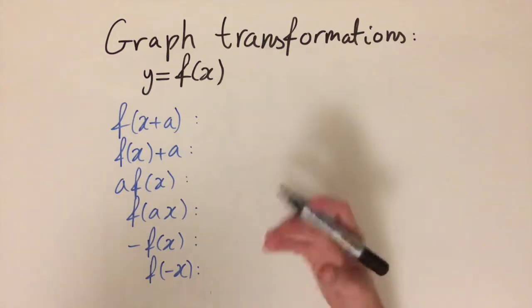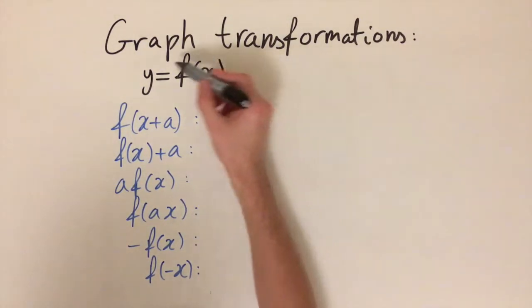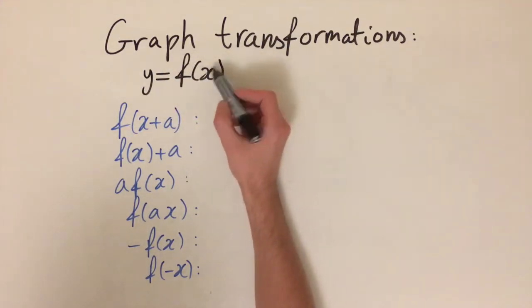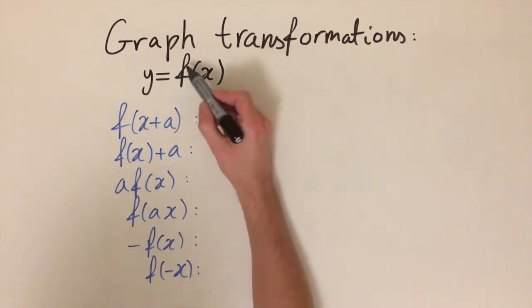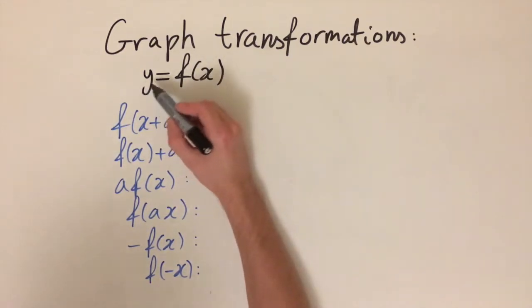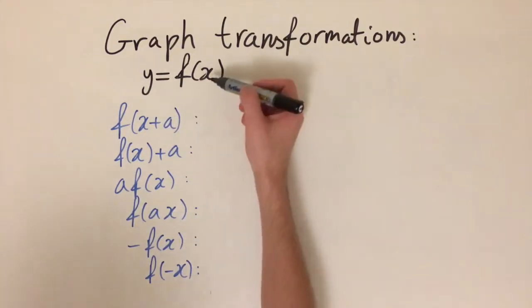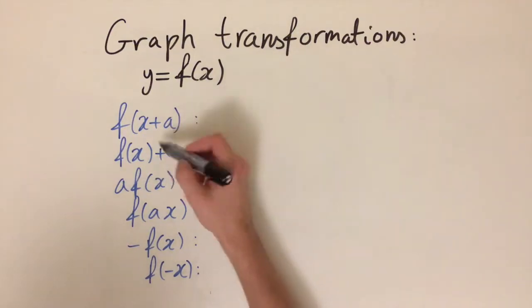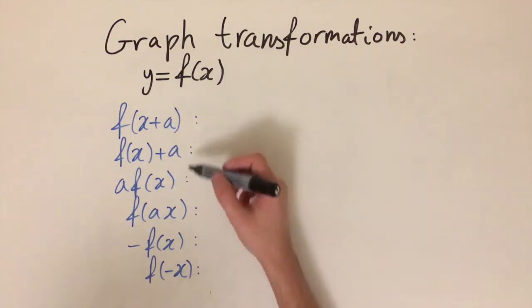So I just want to point out this is our general function that we're dealing with. This is function notation: we have our input x, we have some function called f, so it takes in the input x and it gives us an output y. Now we're going to change this—change the input or change how the function looks through some constants.